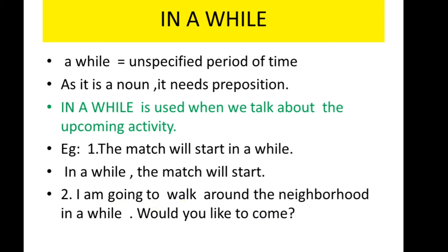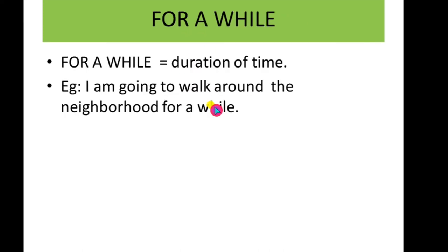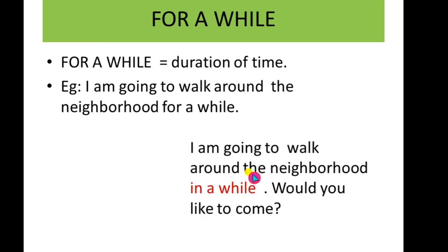'For a while' indicates an unspecified duration of time. Example: I am going to walk around the neighborhood for a while. It means I'm going to walk for one hour or two hours. Here, I'm mentioning the duration of time.